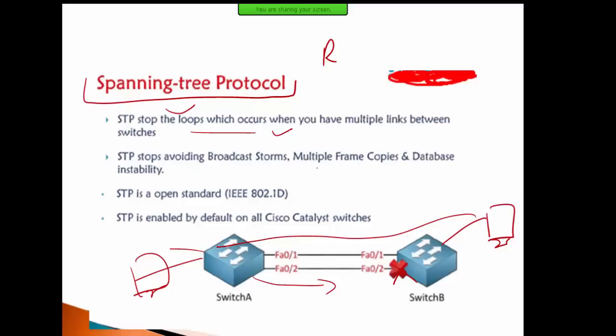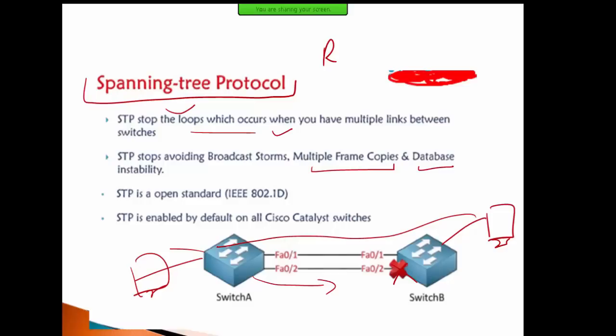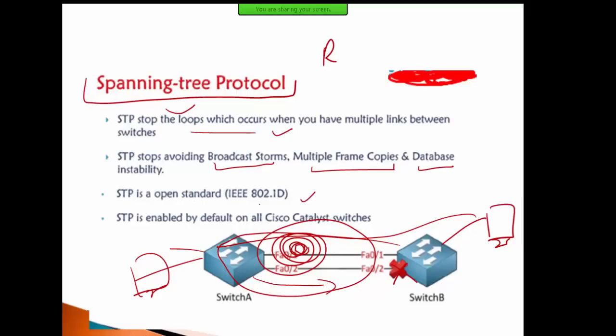STP prevents multiple frame copies — one type of frame being sent repeatedly — database issues, and broadcast storms. Broadcast storms, meaning broadcast packets looping endlessly — STP makes those void. STP is an open standard, and its code is 802.1D.